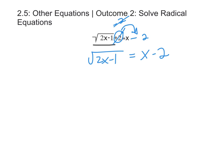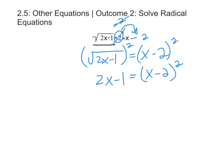The next step is to get rid of the radical. To get rid of the square root, you're going to square the whole thing, and whatever you do to one side you have to do to the other. When you put a square root to the power of 2, that cancels out the square root, leaving us with 2x minus 1 on the left and x minus 2 all squared on the right.